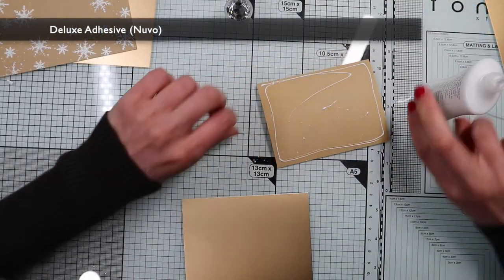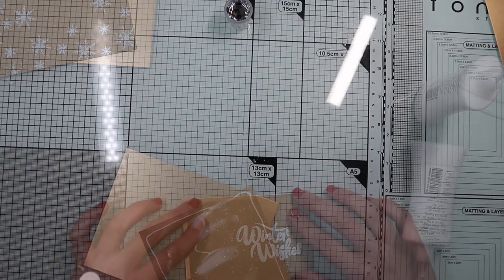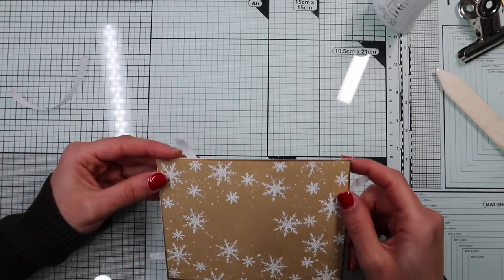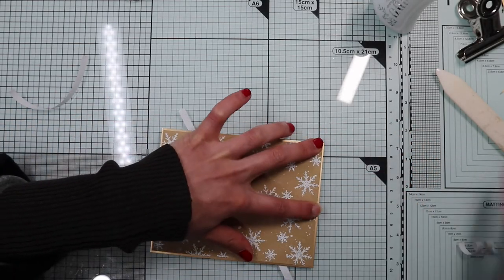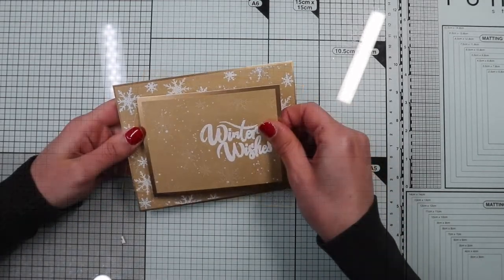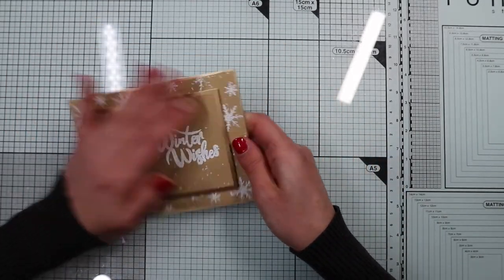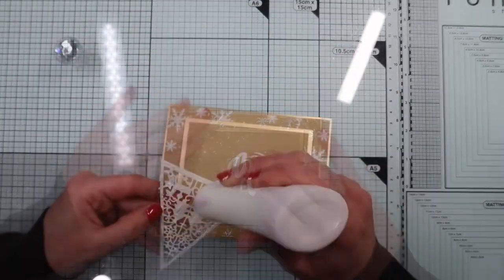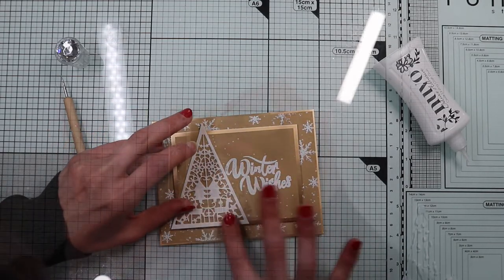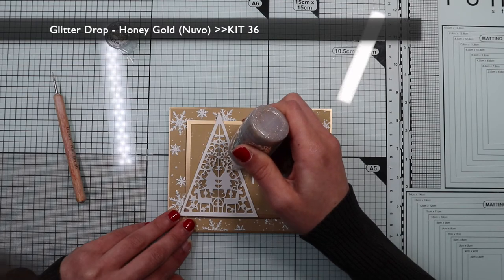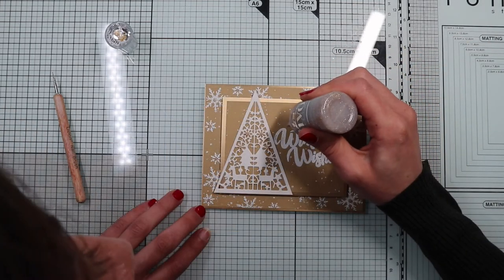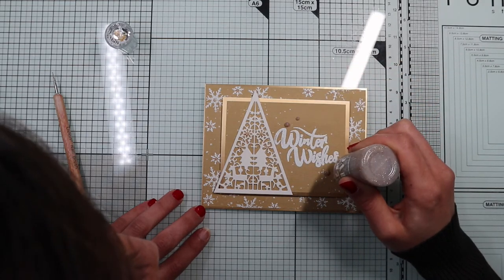I'm ready to assemble the card, gluing all the panels one on top of the other and on the card base. For the smallest panel, I'm going to use some foam tape to give a nice dimension. I'm going to stick my focal point with some liquid adhesive. I finish my card by adding some glitter drop to the center of the snowflakes, as well as close to the sentiment. And the card is finished.